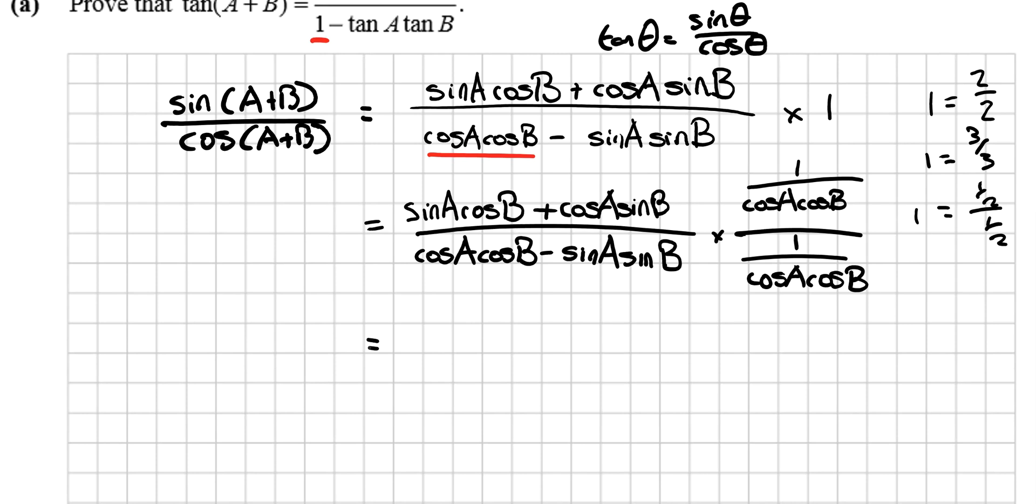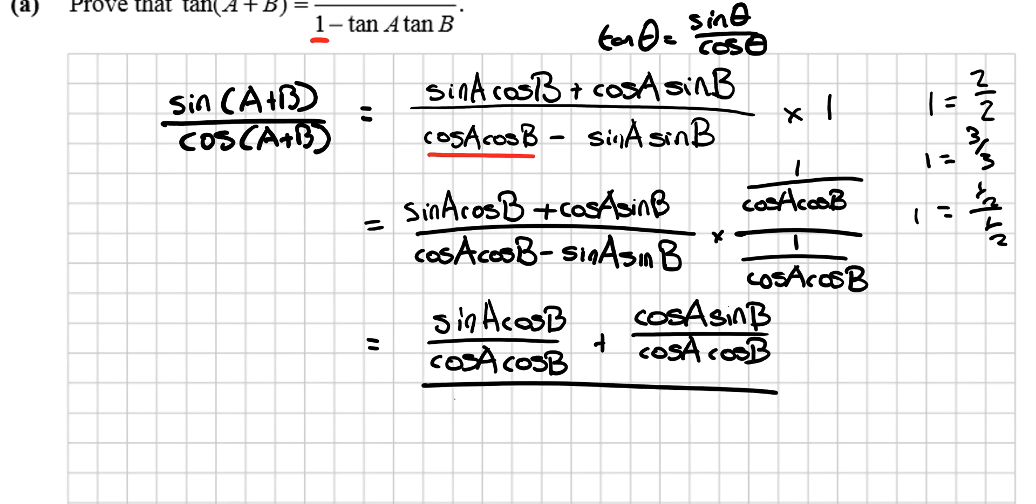So now I'm multiplying one big fraction by another big fraction. It just so happens that on the top line I have a fraction here as well. So how do I multiply fractions? It's top by top, bottom by bottom, so I get sin(A)cos(B) all over cos(A)cos(B) plus cos(A)sin(B) all over cos(A)cos(B).